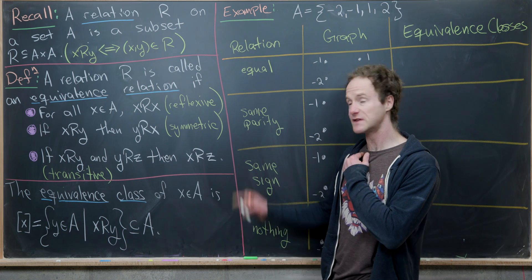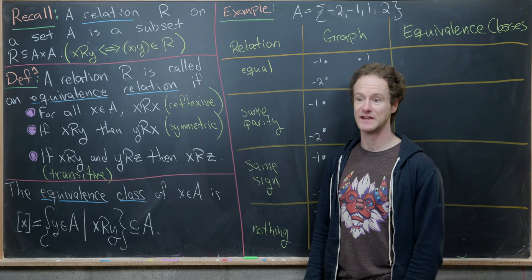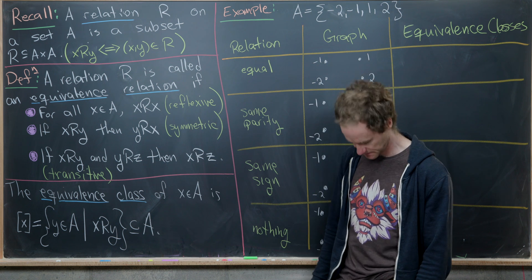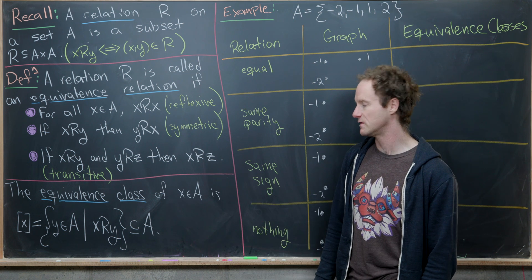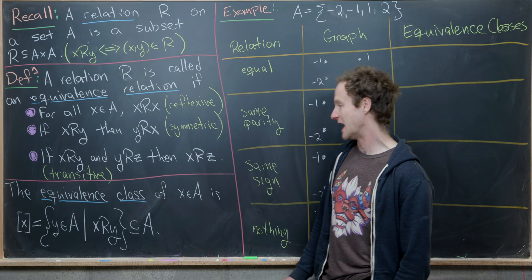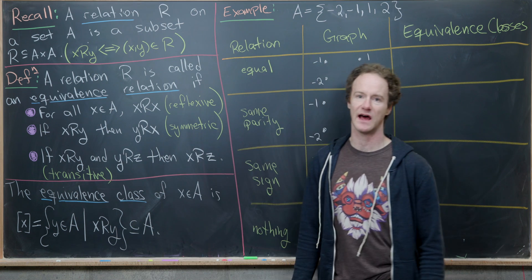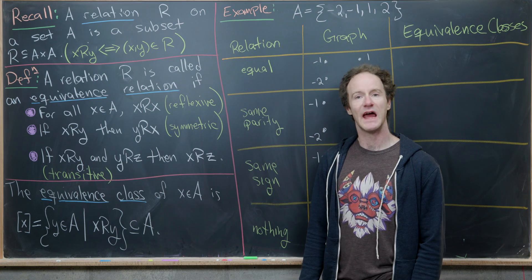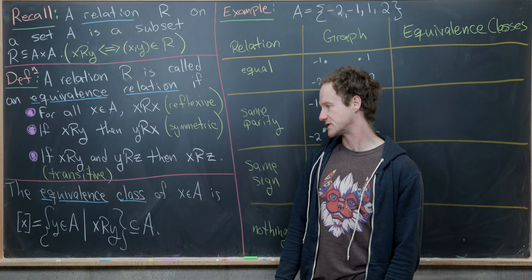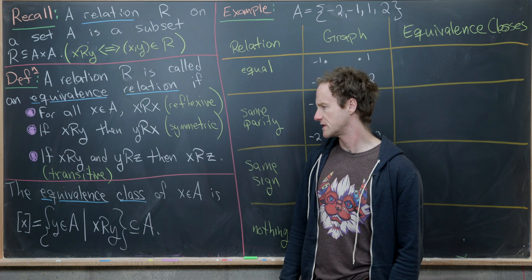In the last video, we looked at these properties and when they held and when they did not hold. We had some examples of relations that were indeed not equivalence relations. Next, we need the notion of an equivalence class, which is attached to an element — it's the set of all elements that are equivalent to, or related to, that element.